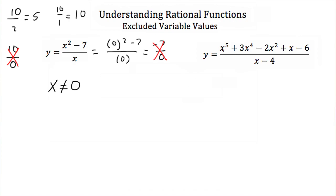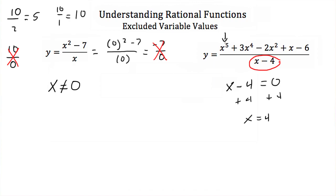Let's look at our next example. Here we have y is equal to x to the fifth plus 3x to the fourth minus 2x squared plus x minus 6, all over x minus 4. Now again, we cannot divide by 0. So if we look at just our denominator and set that equal to 0, I could add 4 to both sides and I get x is equal to 4. If I plug in 4, in our numerator we get a very large number, but in our denominator 4 minus 4 is 0. And again, you cannot divide by 0. So in this rational function, x can be any number we want it to be, except x cannot equal 4.